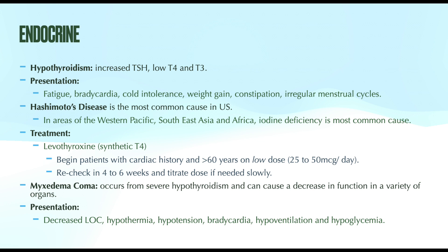All patients with hypothyroidism, regardless of symptoms, should be treated. Treatment is straightforward: levothyroxine, which is synthetic T4. The goal is to normalize the TSH level. Initial dosing can generally be started at the intended full dose, but if the patient has established cardiac disease or is above 60 years of age, start on a low dose of 25–50 micrograms daily. After starting treatment, TSH should be remeasured in four to six weeks and titrated as needed.